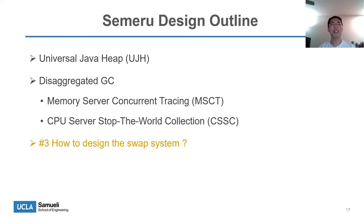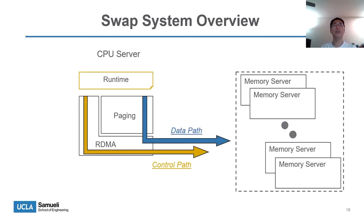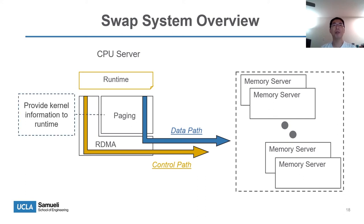The third challenge is how to design the swap system for a disaggregated runtime. The current swap system is not robust enough to support distributed workloads such as Spark. We design a swap system based on NVMe over Fabrics. Our swap system has two message paths: the data path and the control path. The control path is used by applications to transfer small metadata. The data path is connected to the paging system for excessive swap operations. We add function support for SAMRU, such as letting the runtime get more information from the kernel, and we also add optimizations like utilizing InfiniBand RDMA to speed up data transfer.